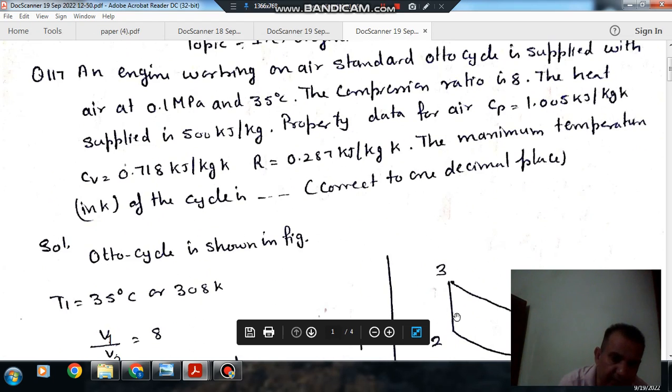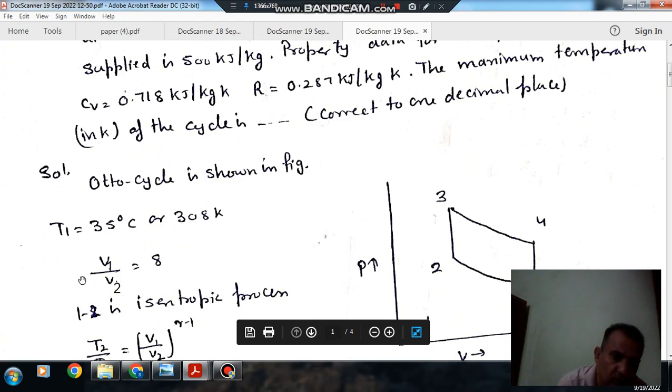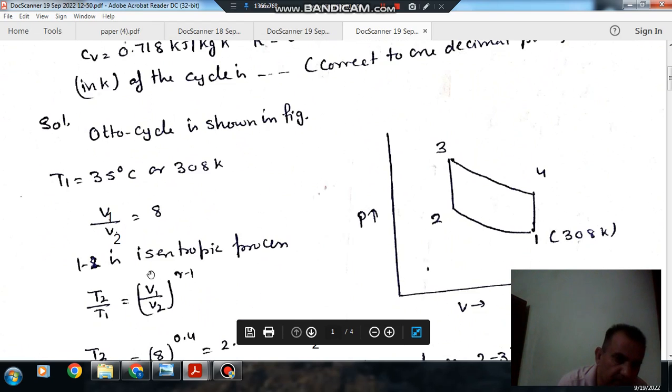So v1 by v2 is your compression ratio. v1 by v2 is your compression ratio and compression ratio is 8, so v1 by v2 is your 8.